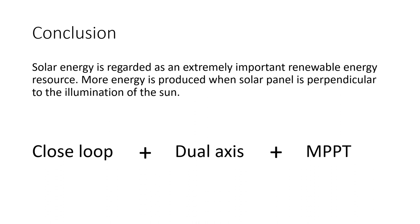To summarize, solar energy is regarded as an extremely important renewable energy source and it is producing the maximum power when the solar panel is facing to the sun. It is preferred to use a closed loop system with a dual axis and in combination with MPPT.